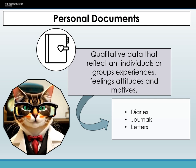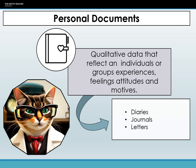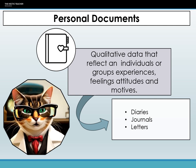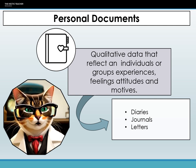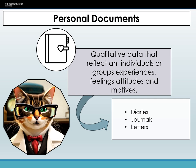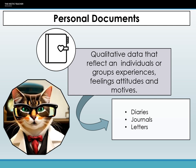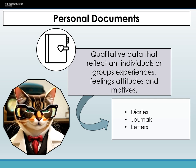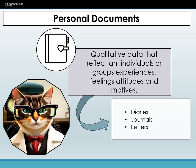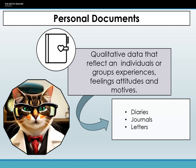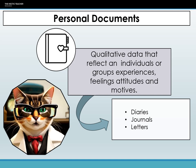However, there are also limitations to consider. These documents are inherently subjective, capturing only one person's perspective, which might not be generalizable to larger groups. The potential for bias is another issue. Individuals might portray events or themselves in a specific manner, potentially omitting or exaggerating certain details. Sometimes it's challenging to gauge a document's broader social or historical context without supplemental information. And, of course, there's the matter of availability and access — many personal documents might be private or simply inaccessible to researchers. Finally, given the subjective nature of these documents, interpreting them requires a discerning eye, recognizing potential biases and the nuances of personal narratives.